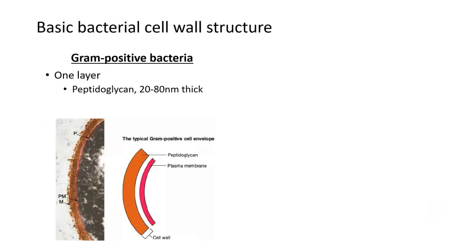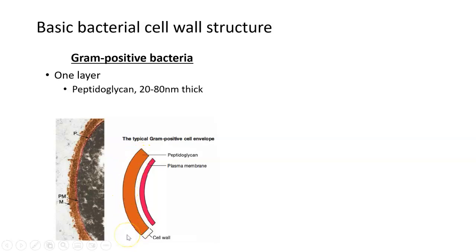We're going to start by talking about a gram positive cell wall. A gram positive cell wall is a one-layered structure. Here in this picture you can see the plasma membrane of a bacterial cell in pink, and then outside or external to that plasma membrane you can see the gram positive cell wall. What you notice is there's just one layer here.